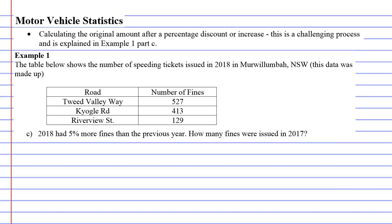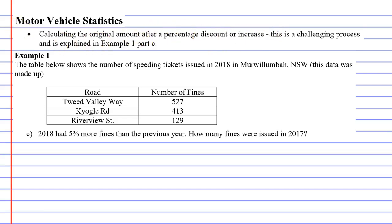We're looking at question C, the third dot point, which involves calculating the original amount after a percentage discount or increase. This is a challenging process, so we'll explain it as we go along.